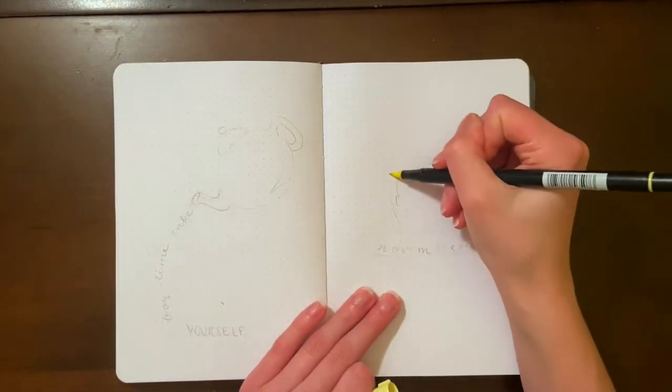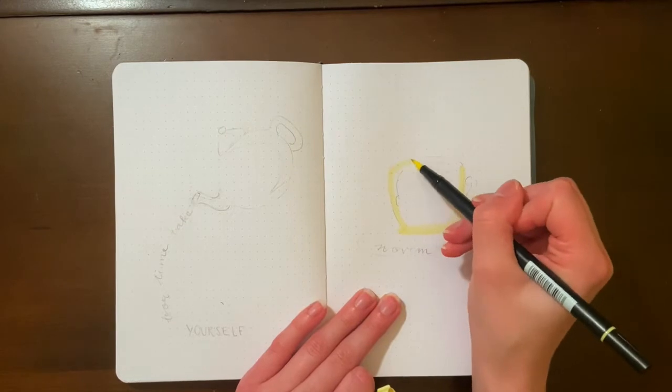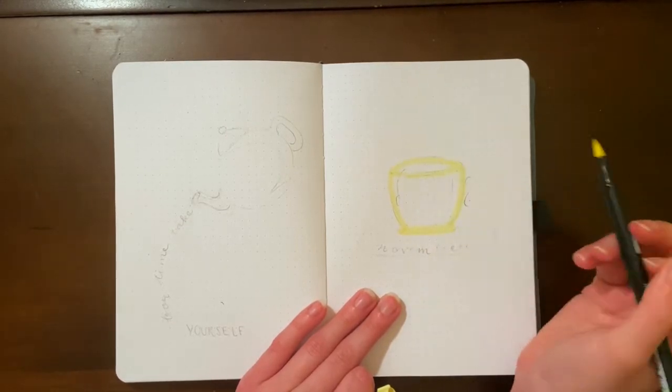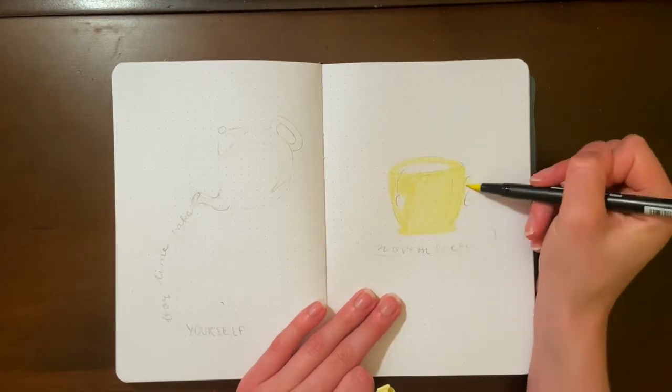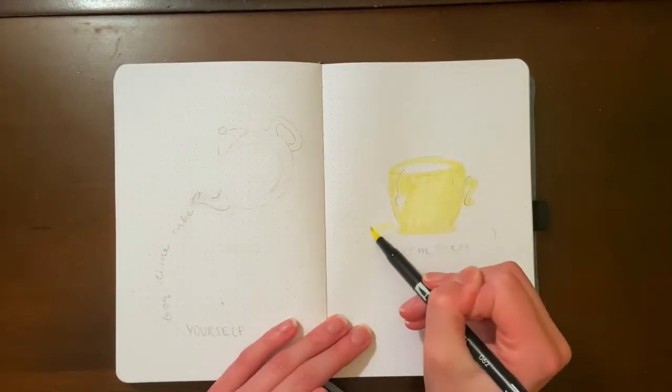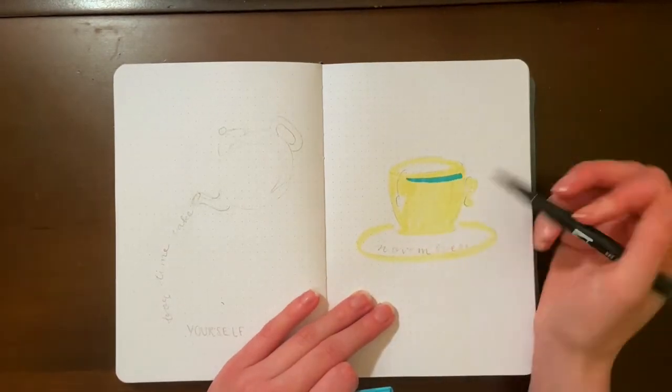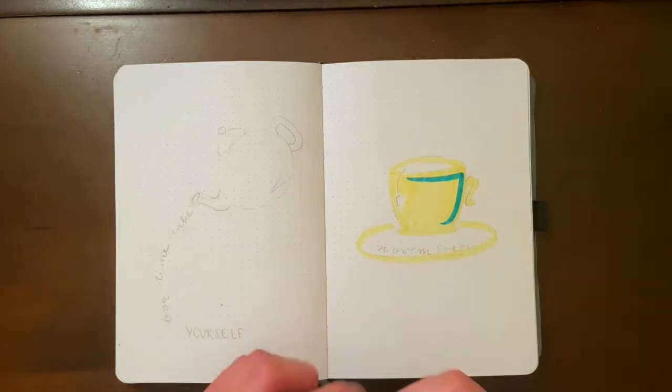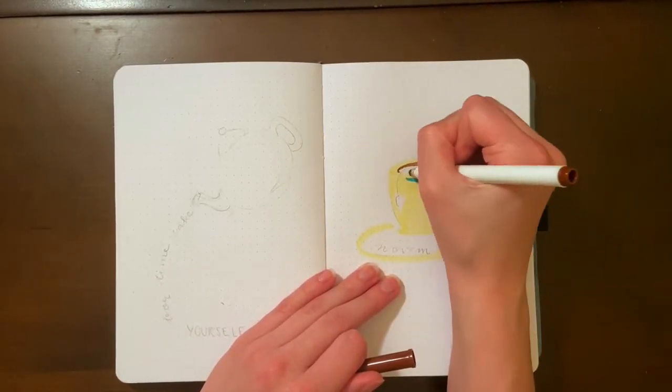So for November, I decided to go with a tea theme for a couple of reasons. One, November is when it's really starting to get cold out, so a nice hot drink is always good. And personally, I am a big tea drinker and I've definitely been getting back into drinking tea right around this time of year. So for my setup, I used a couple of colors: this pastel yellow, a couple of shades of teal, some brown for the tea, and a green.